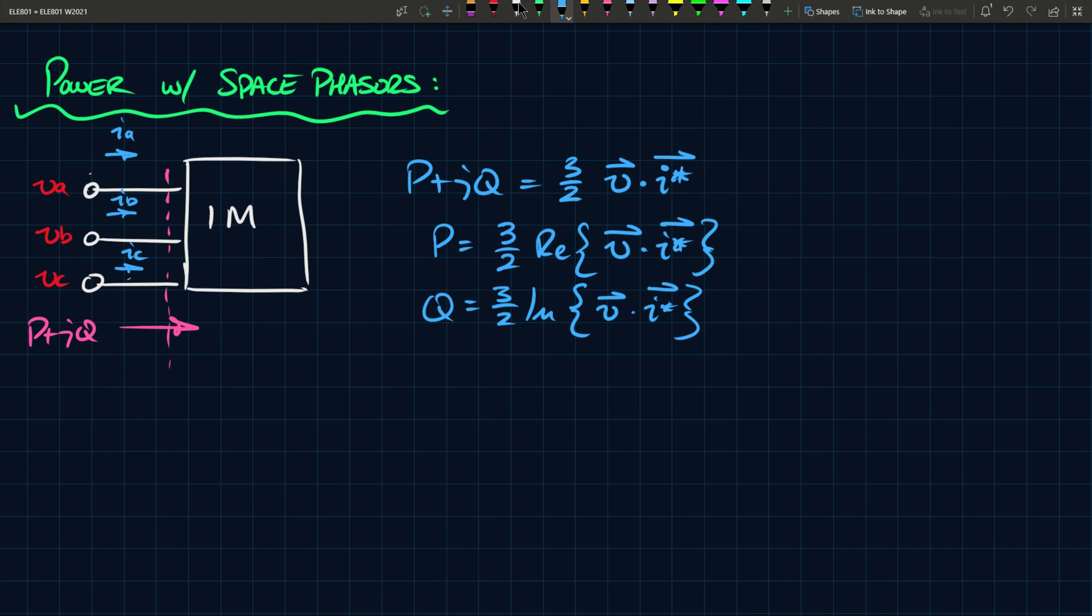So, of this total power P plus jQ, some of it is going to be lost in RS and RR, which were the stator and the rotor winding resistances. And some of it will be used to charge the inductances, and that's not active power, that would be reactive power. And the remaining power will be mechanical power, which corresponds to the power delivered to the EMF source. And the EMF source in this case, we called it the speed voltage, and it was defined as j omega R lambda R, and this was a space phaser.